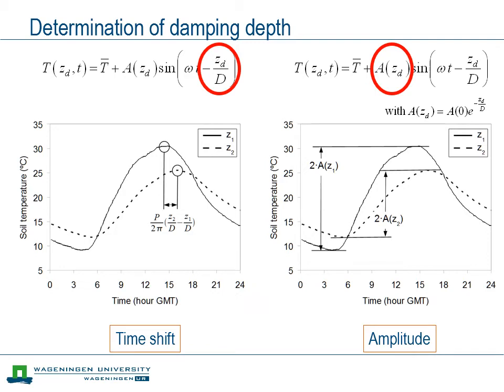In the same observations, the amplitude of temperature variation decreases with depth, consistent with the e-folding depth expression. Comparing the amplitude at the surface with that at a greater depth, we can also determine the damping depth. So now we have two routes to determine the damping depth and from that the thermal diffusivity: either from the time shift or by looking at the amplitude.